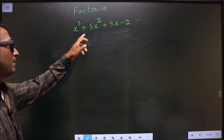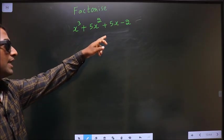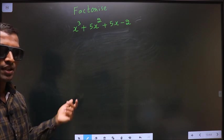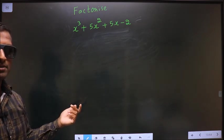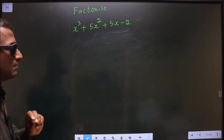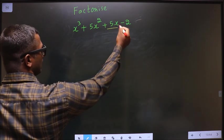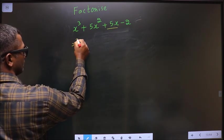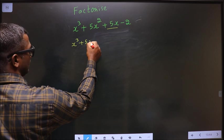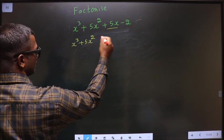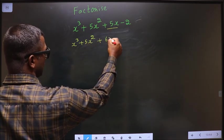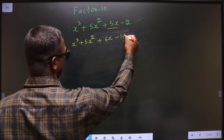Factorize x cube plus 5x square plus 5x minus 2. To factorize this, I have to change the x term which is plus 5x. So in place of plus 5x, we should write plus 6x minus 1x minus 2.